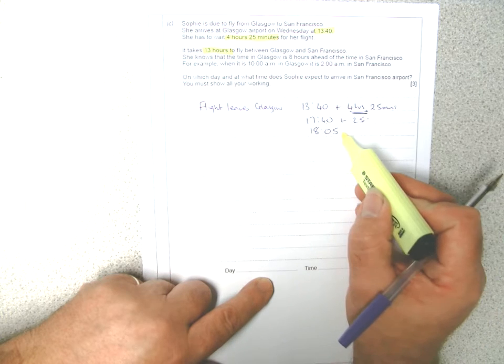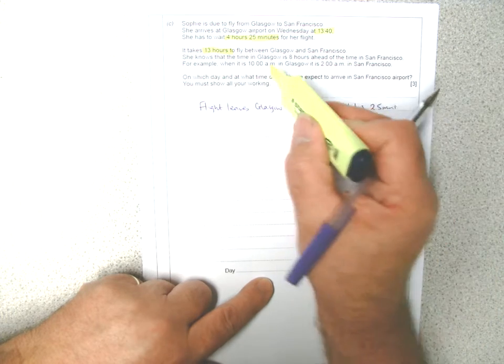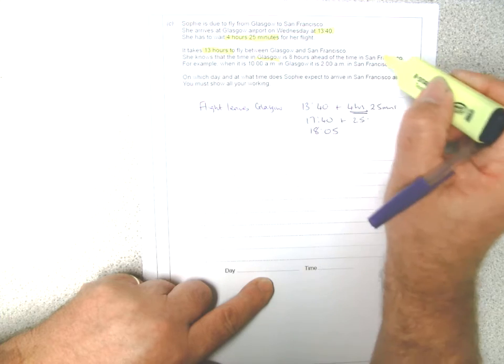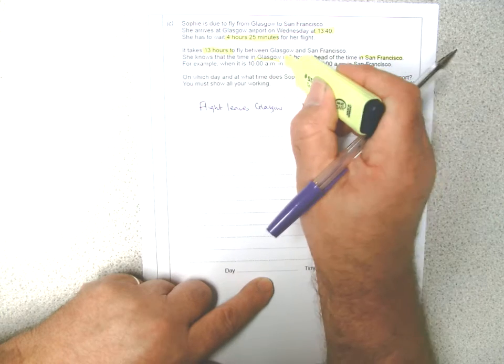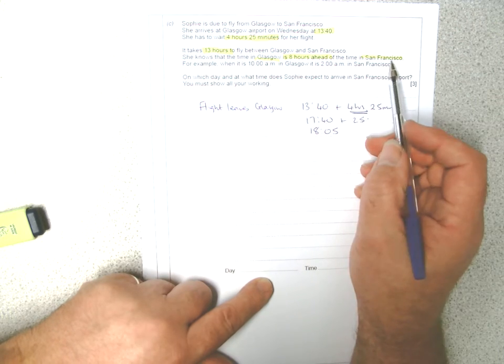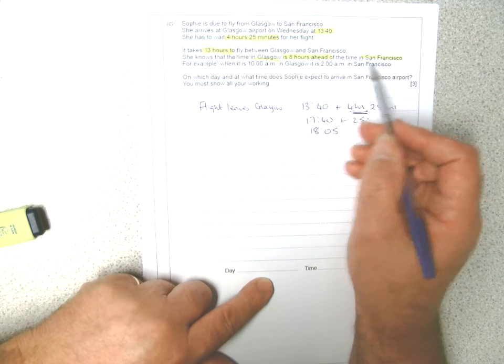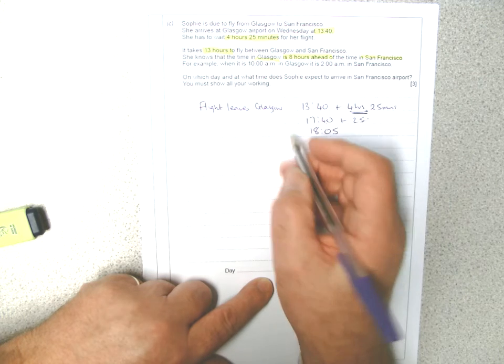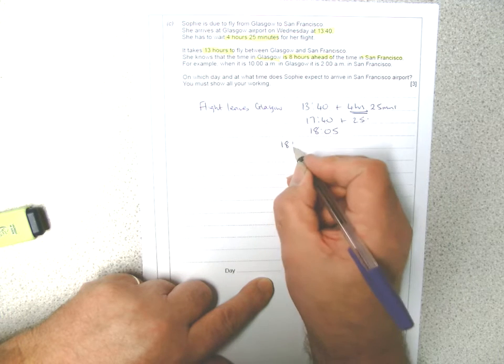So it's going to be 13 hours later. In that time, there's a time difference between Glasgow and San Francisco. Glasgow is eight hours ahead of San Francisco, or the other way around, San Francisco is eight hours behind.